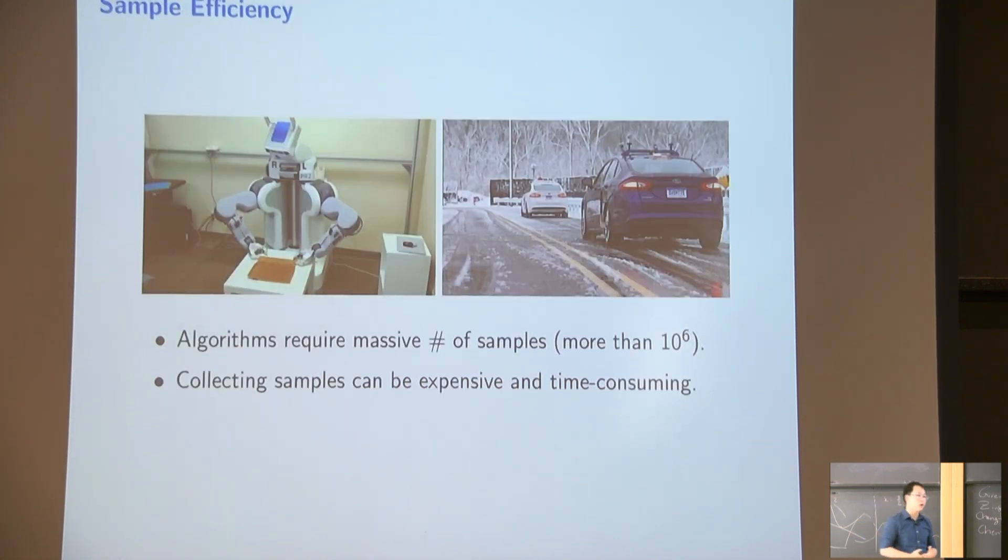So one very important criteria in seeing which reinforcement learning algorithm is good is in terms of sample efficiency. Why sample efficiency is very important in practice? Because a lot of modern applications, like you want to go and you want to train Atari games, usually those state-of-the-art algorithms already require millions of samples. And this takes a lot of time, usually weeks to months, to train it.